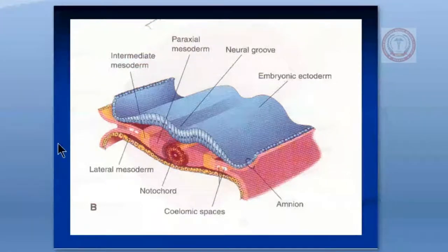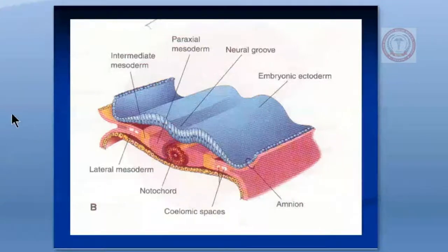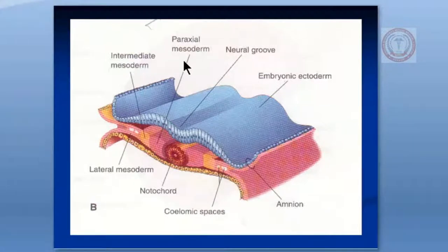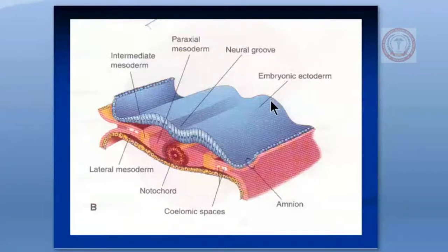This is the first part of the paraxial mesoderm, this is the intermediate mesoderm, and this is the lateral plate mesoderm on both sides. This is the region from where the kidney systems will form. The intermediate mesoderm is present on both sides at the cervical, thoracic, lumbar, and pelvic regions, and in the whole area the kidney system will form.